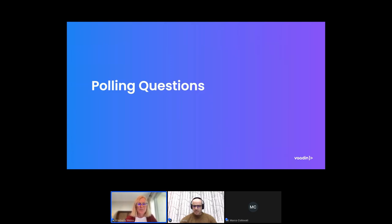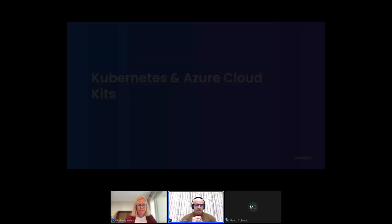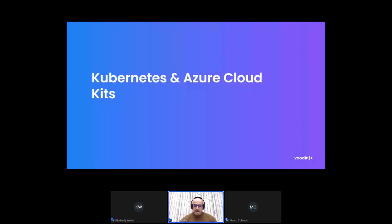Thank you for participating in our polls. I'm going to turn things over to Tarek, who's going to give an overview of what's in these two kits. With the introduction of Vaadin 23.3, which was released in December 2022, we had two new kits: the Kubernetes Kit and the Azure Cloud Kit. I'd like to describe an overview of what these kits do and what benefits organizations can get from them.